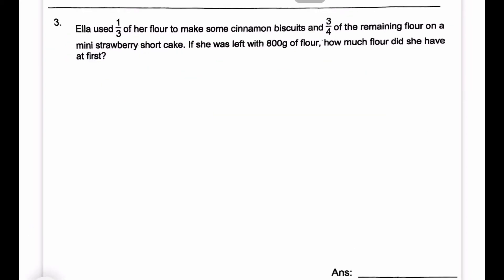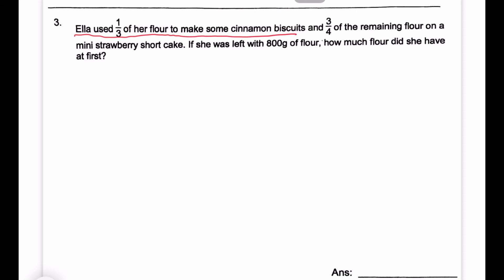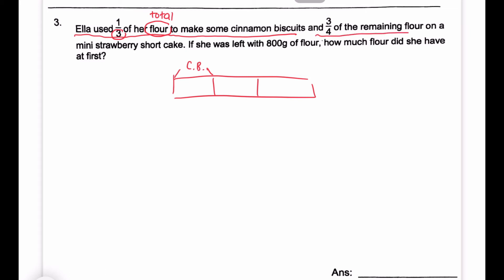She used one third of her flour to make some cinnamon biscuits. That flour is the total — three units total. So let's start the model by drawing three units, and she used one third for cinnamon biscuits. Then, three-quarters of the remaining flour. The remaining flour is two units — two-thirds left. But she used three-quarters of the remaining, so now it's four units. We have to cut each of the two remaining units into two.